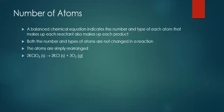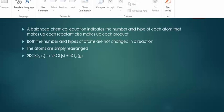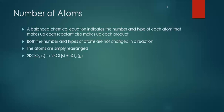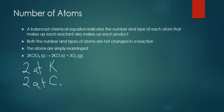First of all, number of atoms. A balanced chemical equation indicates the number and type of each atom that makes up each reactant and each product. The number and types of atoms are not changed in a reaction — we're simply rearranging those atoms to form different products. Looking at this example, starting with 2KClO₃, we have two atoms of potassium, two atoms of Cl, and six atoms of oxygen on the left side.